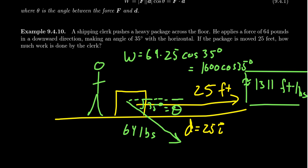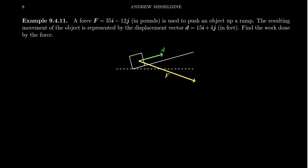We can compute work if it's given in trigonometric form using F times d times cosine of theta, but we can also do the same in algebraic form, which is simpler. Suppose a force is given as 35i minus 12j pounds, and we're pushing an object up a ramp. The resulting displacement vector is 15i plus 4j feet. What's the work between them?